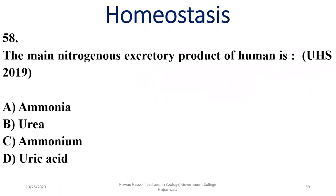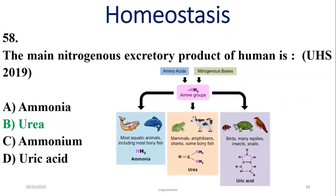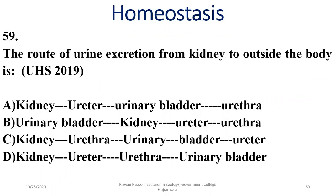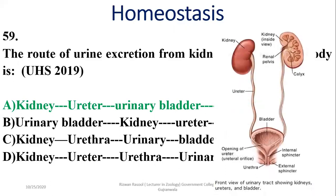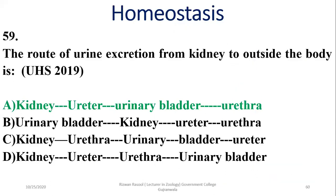Question 58: The main nitrogenous excretory product of humans is urea — that is why we are ureotelic. All mammals produce urea as their major excretory product. Question 59: The route of urine excretion from kidneys to outside the body is: kidneys → ureters → urinary bladder → urethra. Alpha is the right pathway.